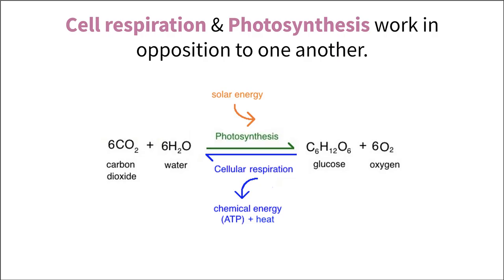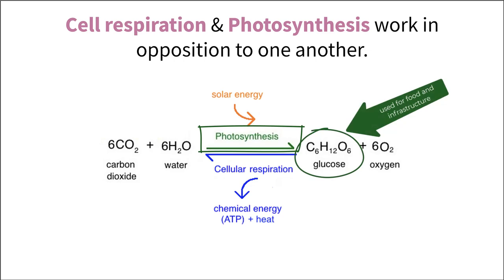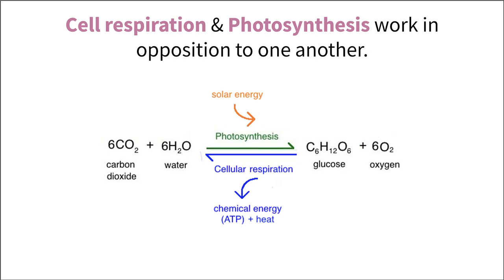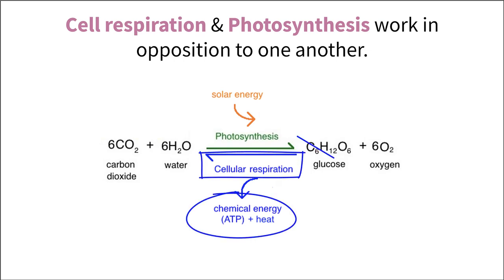Photosynthesis and cellular respiration are two extremely important concepts in biology. To put it simply, photosynthesis is a process that some organisms, like plants, use to create specific molecules that can be broken down as food or used for cellular infrastructure. Cellular respiration, on the other hand, is a process that creates cellular energy by breaking down those food molecules.